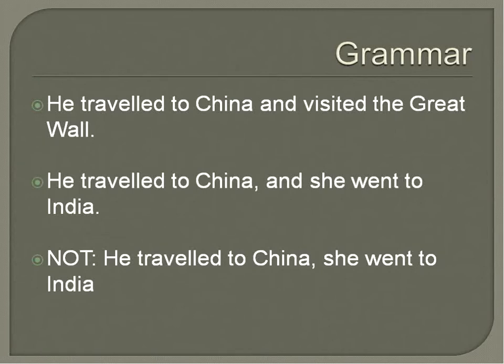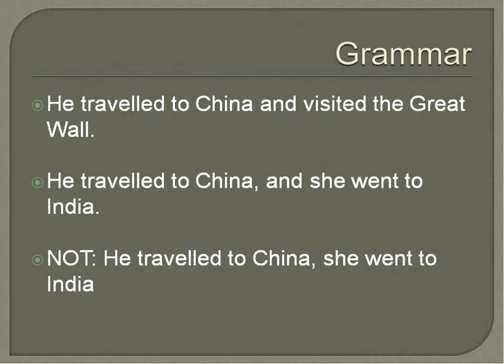First of all, it has to do with the usage of commas. It can be an impulse to just throw a comma in there, but commas don't always work. In this case, the first example involves a compound verb where both verbs have the same subject. For example: 'He travels through China and visited the Great Wall.' Whoever he is, is both traveling to China and visiting the Great Wall. In this case, no commas.